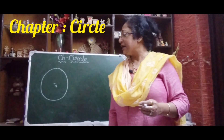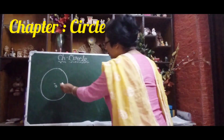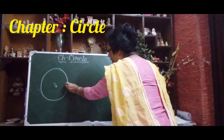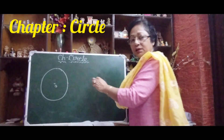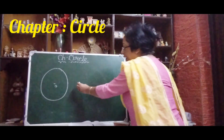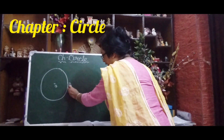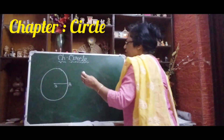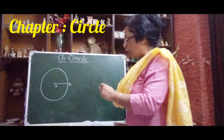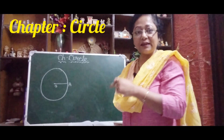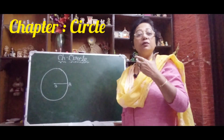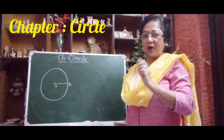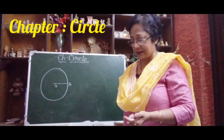Now let us start. If I join the center and a point which is lying on the circle — I am taking a point A — then if I join these two points, the center O and the point A on the circle, then OA is called the radius of the circle.